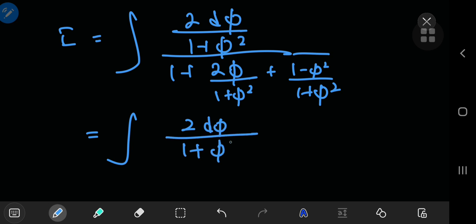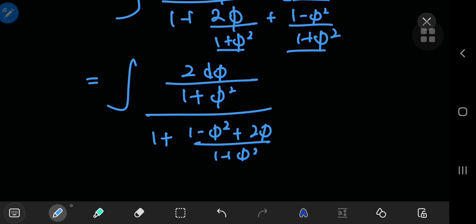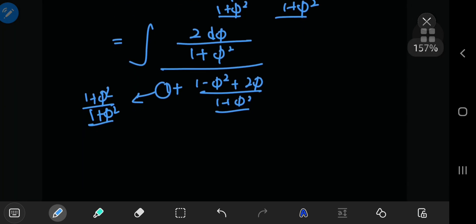If you do some simplification in the denominator, because you have common denominators here, up here you have 1 minus phi squared plus 2 phi divided by 1 plus phi squared, and you have this 1 as well. This 1 can be converted into 1 plus phi squared by 1 plus phi squared, where again you make use of the fact that we have common denominators.